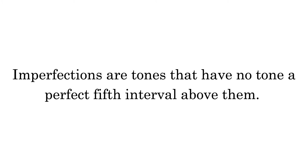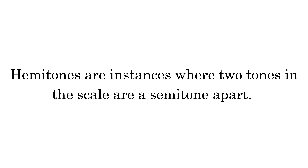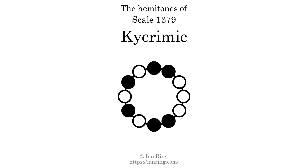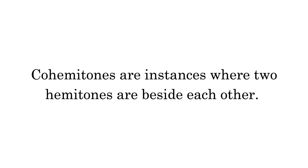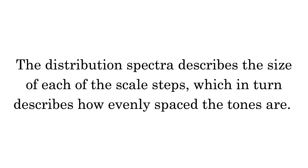This scale has two imperfections. Hemotones are instances where two tones in the scale are a semitone apart. This scale has two hemotones. Co-hemotones are instances where two hemotones are beside each other. This scale has no co-hemotones.